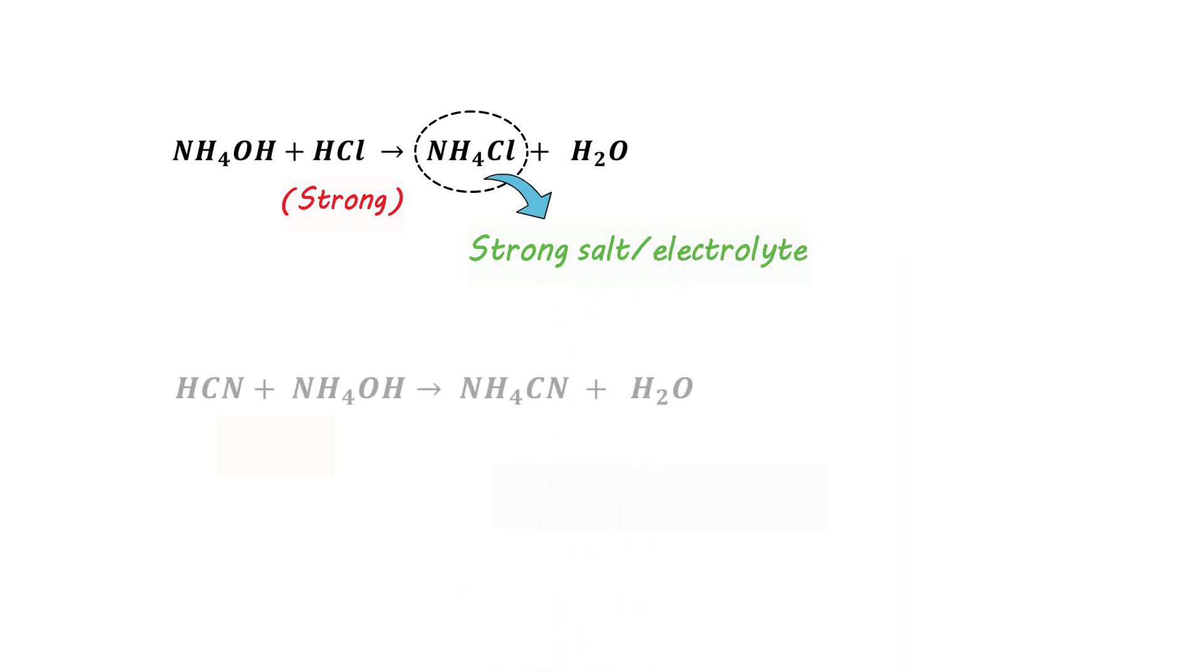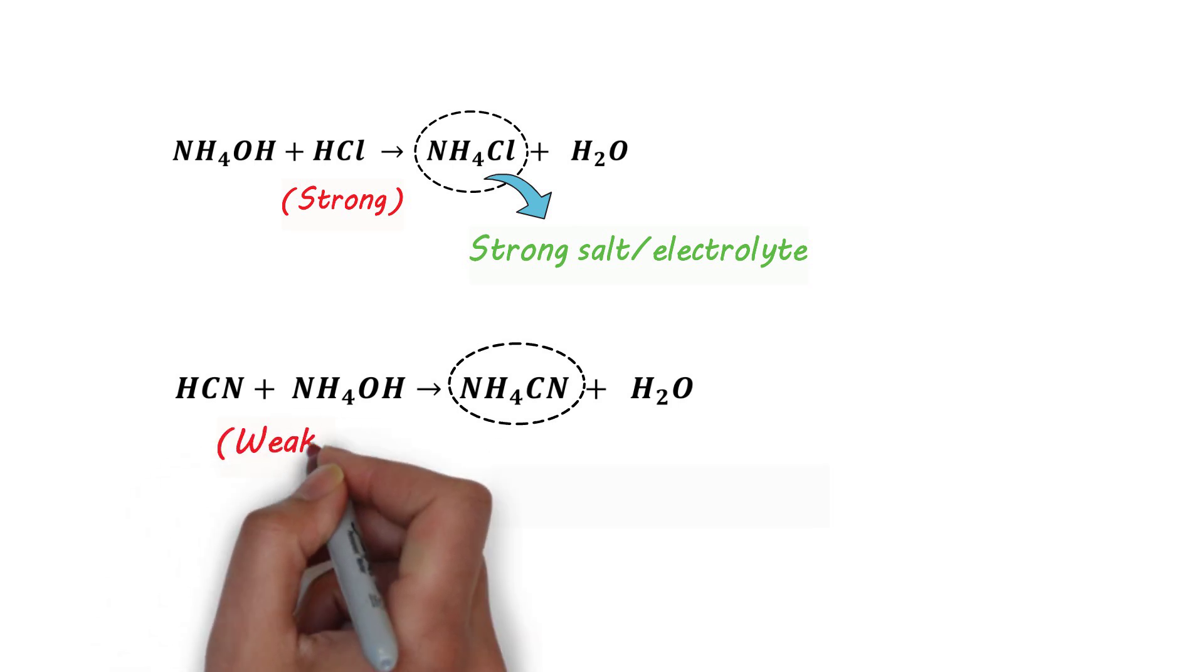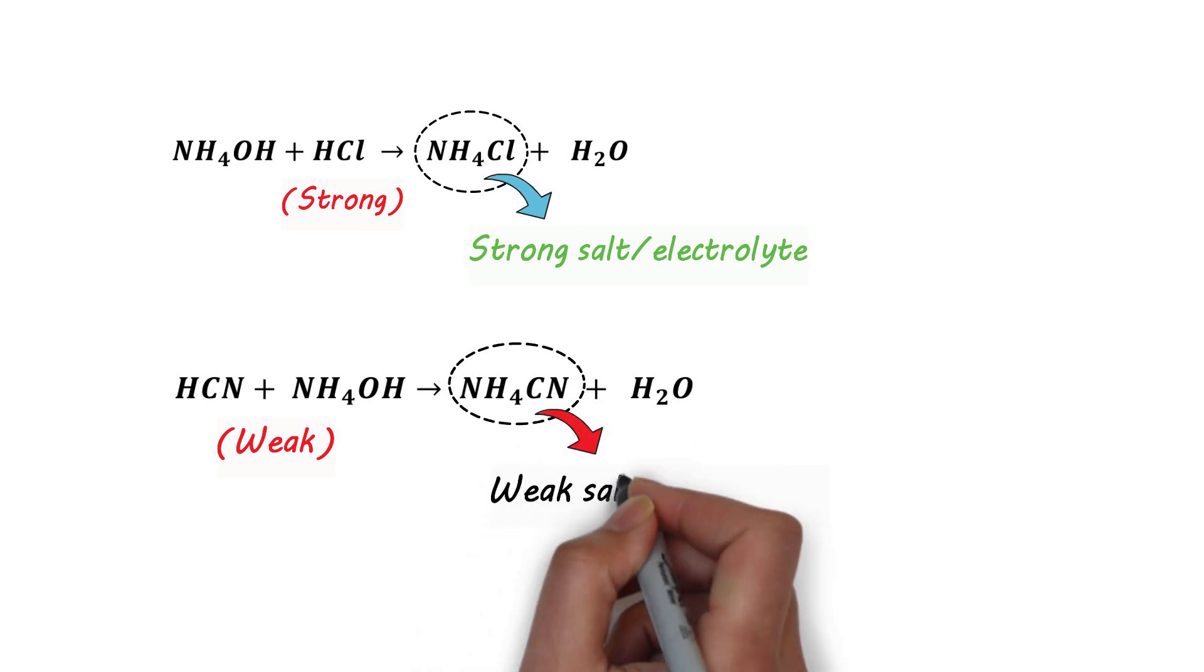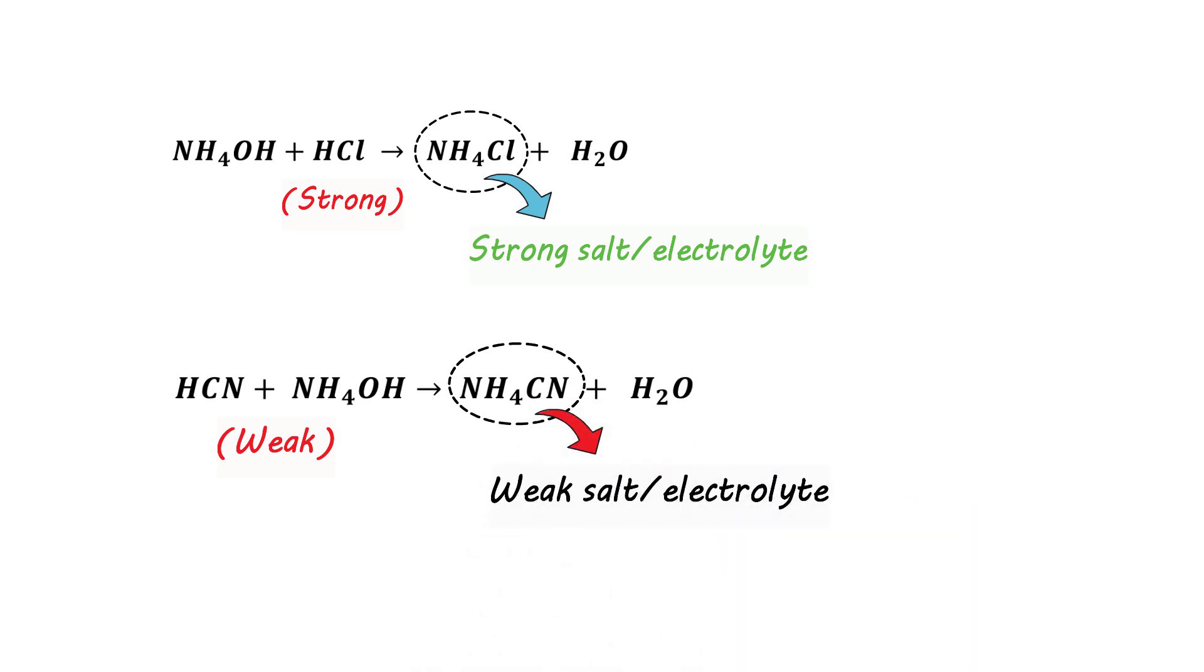But, as you see, ammonium cyanide is obtained from hydrogen cyanide and ammonium hydroxide. Both these are weak. So, ammonium cyanide, as a salt, is a weak salt or electrolyte. I hope you understand it. Thank you.